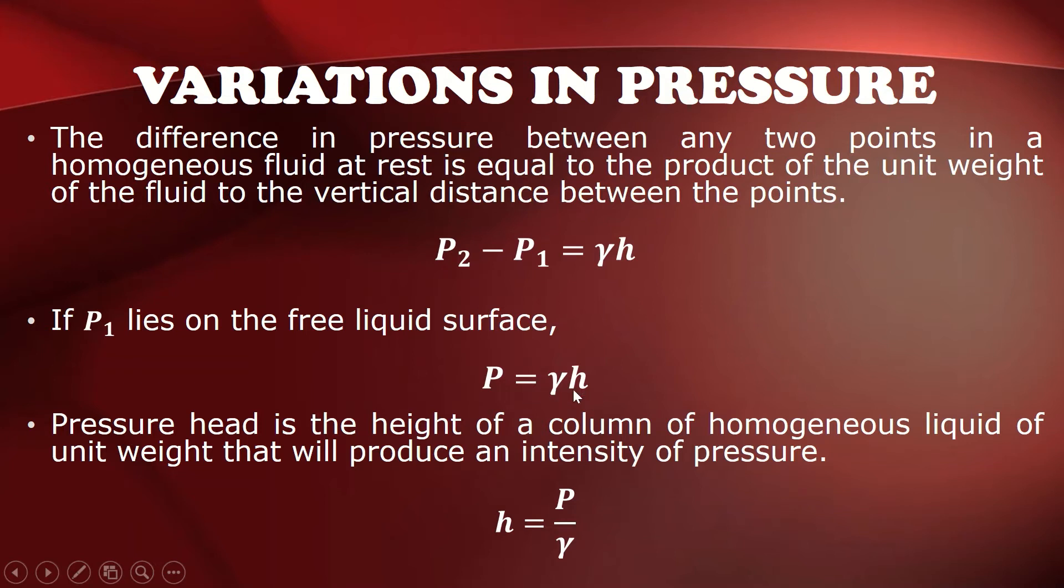And so, if we are going to get for the pressure head or H, given this equation, we can have H is equal to P over specific weight where H is the pressure head or the height of a column of homogeneous liquid of unit weight that will produce an intensity of pressure.